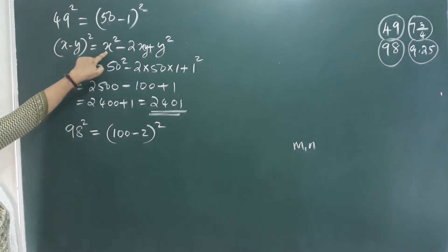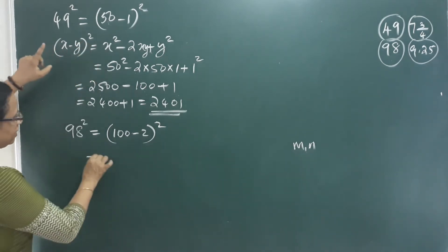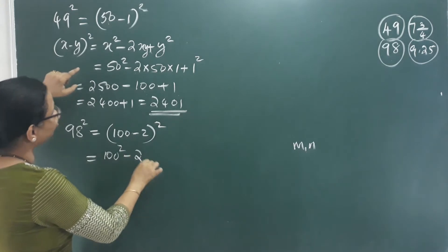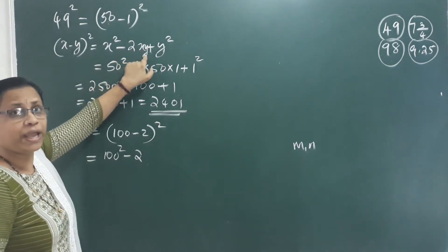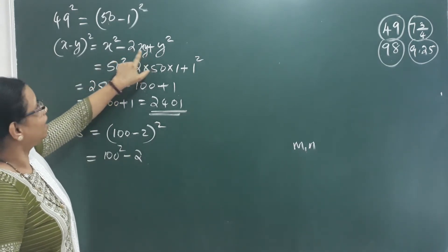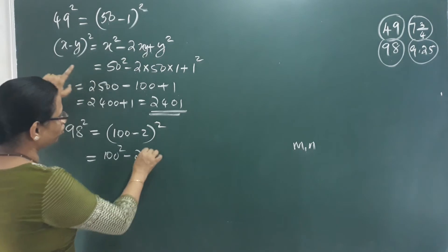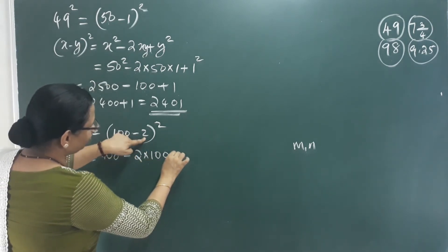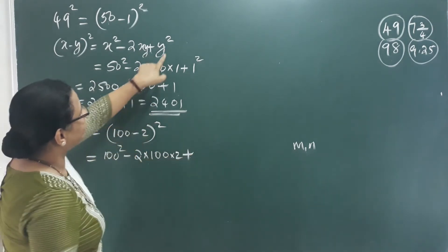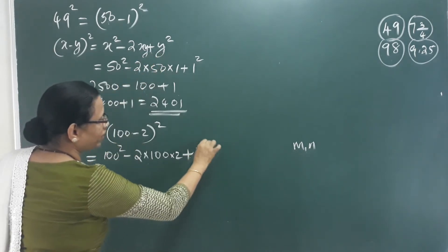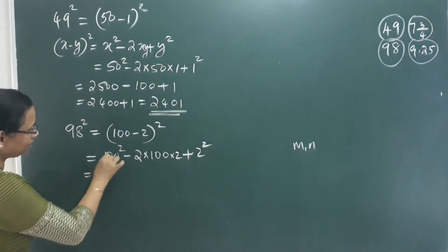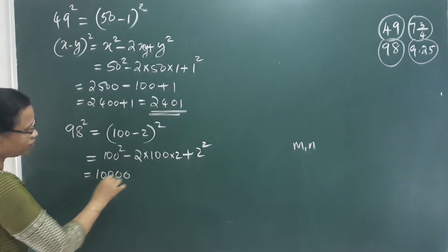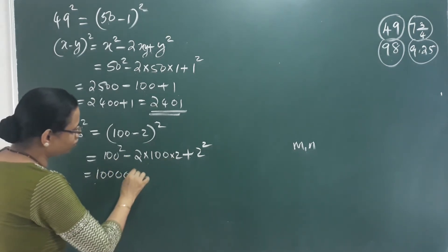x minus y square is equal to x square minus 2xy plus y square. Here x is 100 and y is 2. So we get 100 square minus 2 into 100 into 2 plus 2 square. 100 into 100 gives 4 zeros, that is 10000.